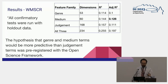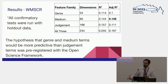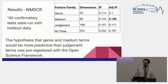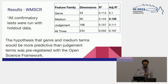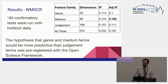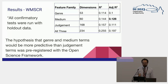We do confirmatory testing on genre, medium, and judgment feature families separately on a partitioned dataset — so no p-hacking concerns — comparing both R-squared and adjusted R-squared scores and p-values. The hypothesis that genre and medium terms would be more predictive than judgment terms was pre-registered with the Open Science Framework. What we found instead is that medium terms are the most predictive of the date of the review. Judgment actually narrowly beats out genre, but with that closeness we might interpret it as closer to a tie.